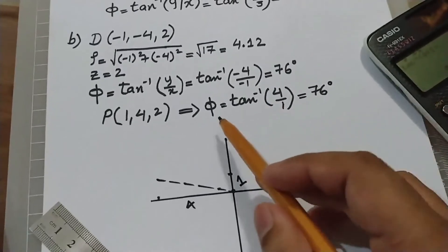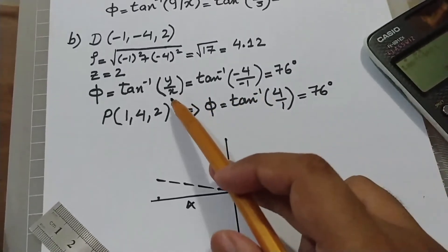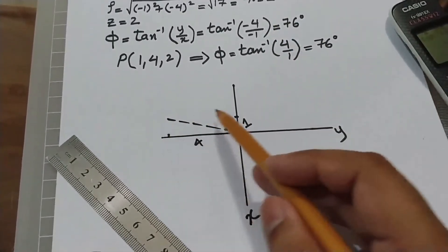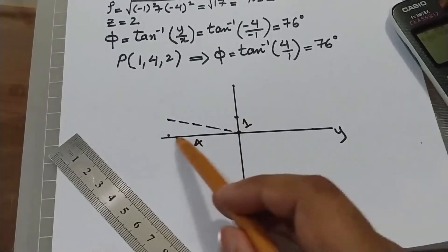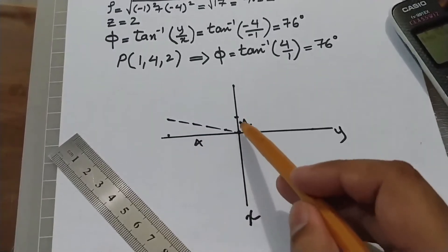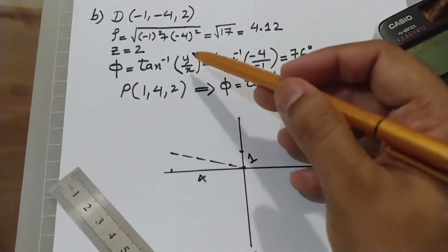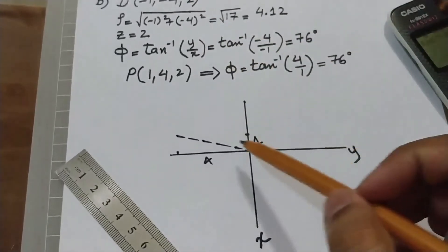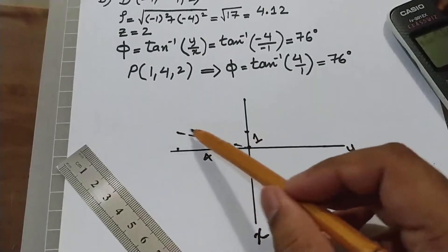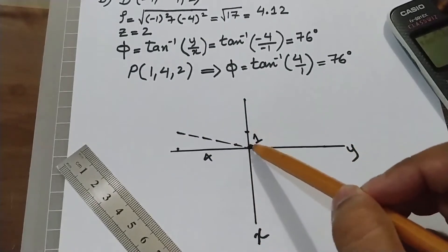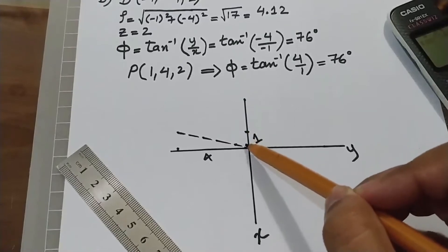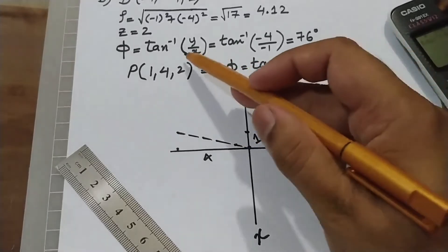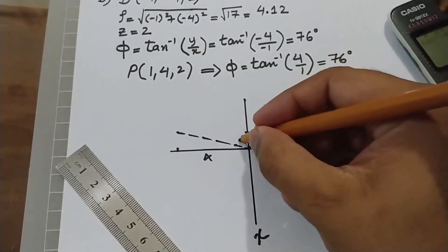Remember that in the formula arctan(y/x), y is treated as the perpendicular side and x is the base. So this formula calculates the angle between the line and the x-component direction — it gives the angle inside the triangle formed by the perpendicular and base.